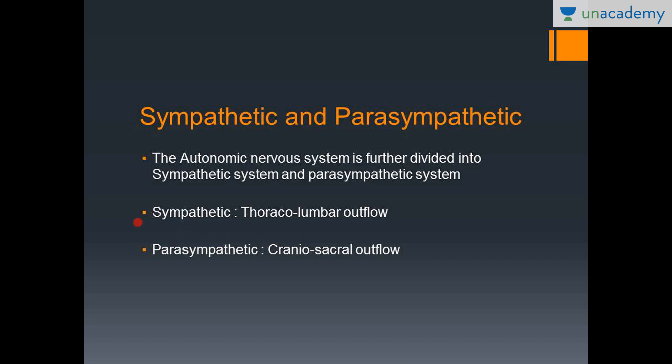So these two terms are very important to know. The sympathetic nervous system is also called the thoracolumbar outflow, and the parasympathetic nervous system is also called the craniosacral outflow.